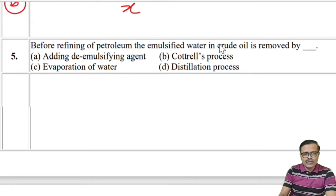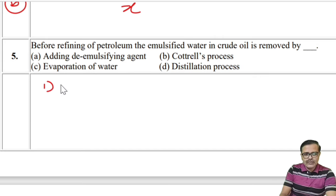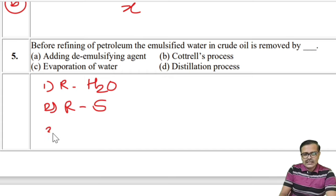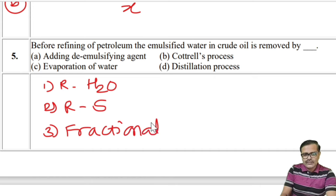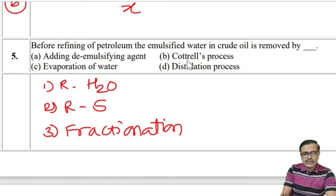Before refining of petroleum, the emulsified water in crude oil is removed. Refining involves three steps: first, removal of water; second, removal of sulfur; third, actual fractional distillation. The emulsified water in crude oil is removed by the Cottrell process. For sulfur removal, copper oxide is added — sulfur reacts with copper oxide to form copper sulfide — so the answer is A.